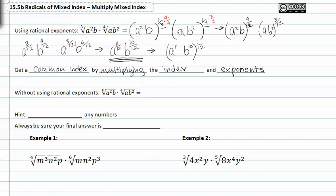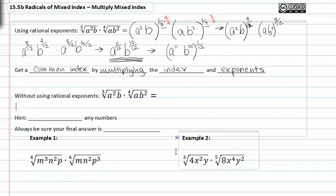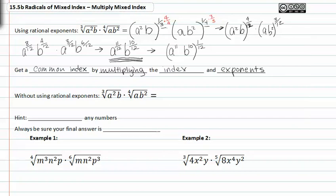You can always do this a much faster way. We have the same situation as we just worked with, but this time we can build up our indexes where they are right now to get a common index. If we build up the first index by multiplying by four to get twelve, we must also multiply our exponents by the same thing. Likewise with the index of four — if we build it up to twelve, we also have to build up the exponents inside the radical. When we do this, we get the twelfth root of a to the eighth, b to the fourth, times the twelfth root of a to the third, b to the sixth.